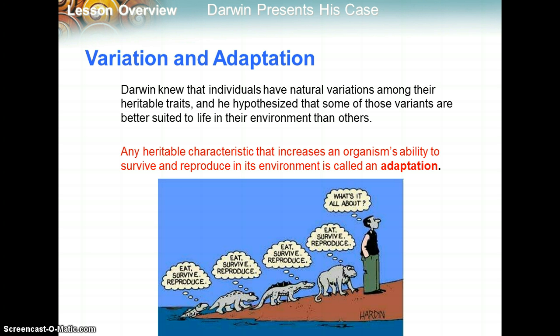This led to him thinking about variation and adaptation. Darwin knew that individuals have natural variations among their heritable traits, like different eye colors, hair color, different heights, things like that. He hypothesized that some of those variants are better suited to life in their environments than others. Any heritable characteristic that increases an organism's ability to survive and reproduce in its environment is called an adaptation — anything that helps something survive long enough to reproduce.